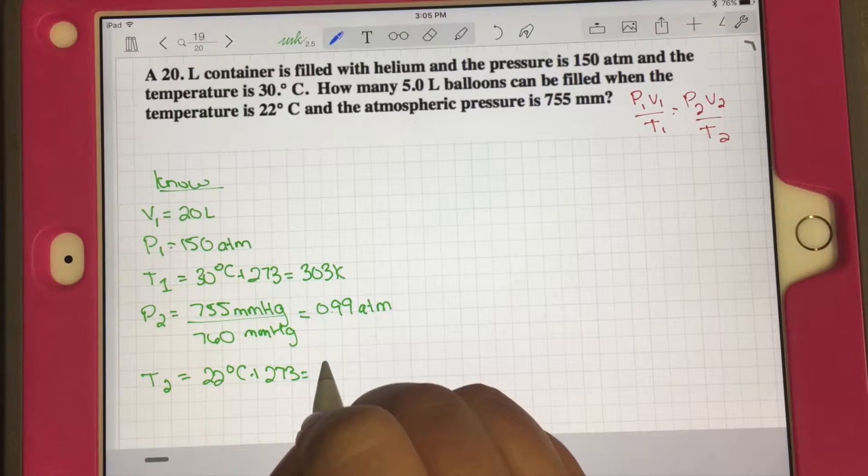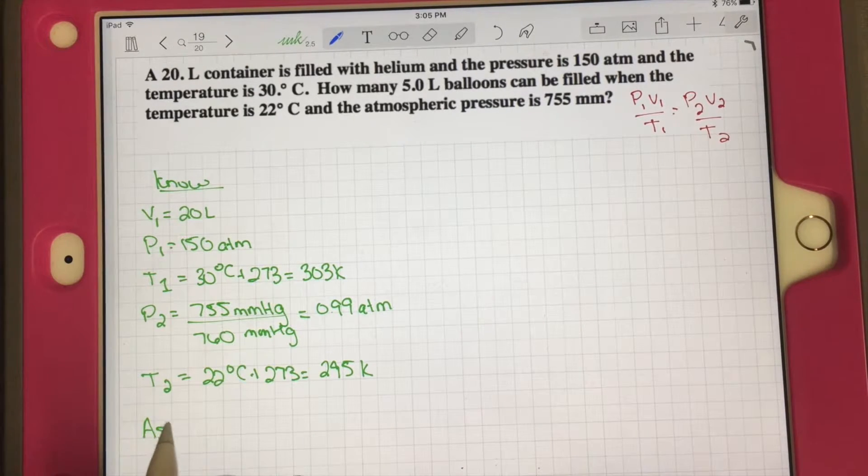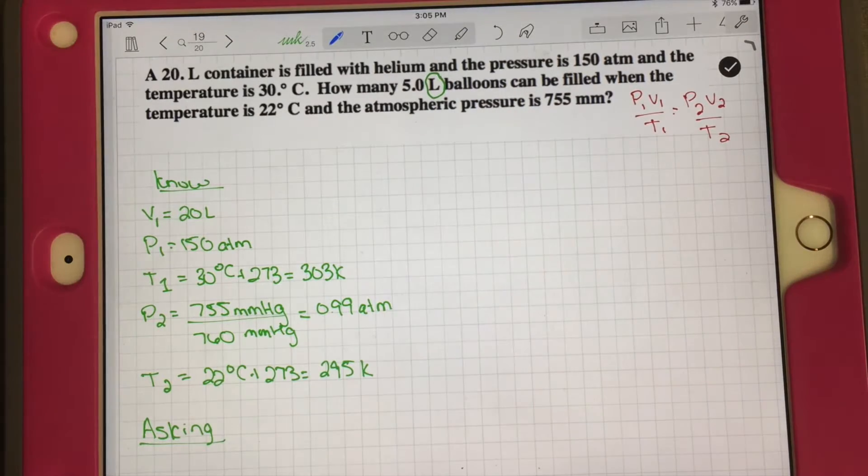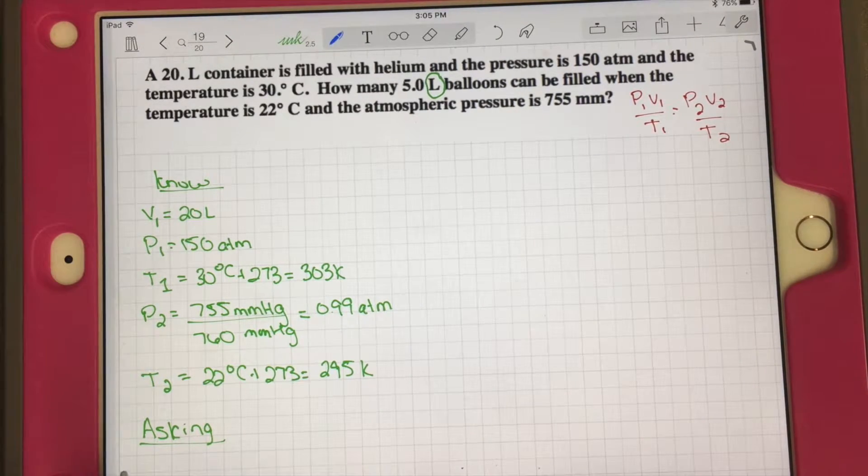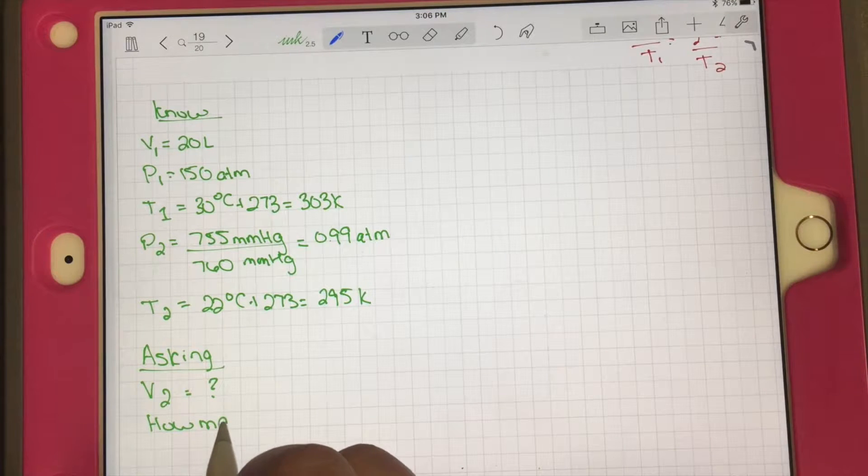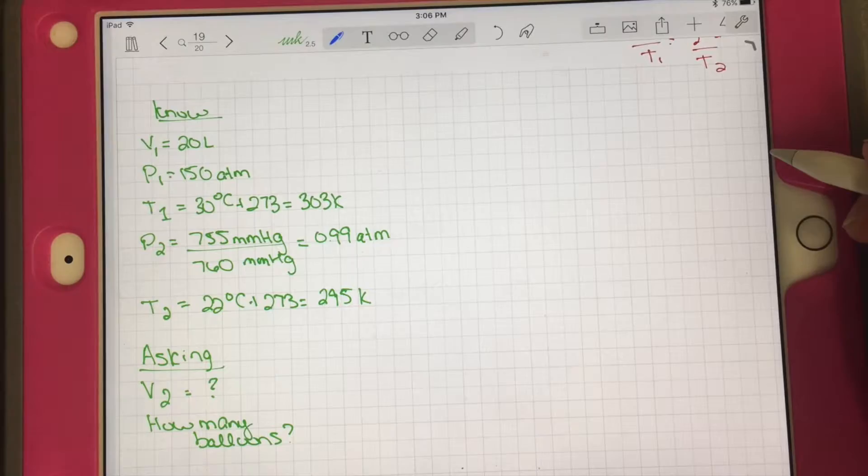T2 equals 22 degrees Celsius that we have to convert to Kelvin. They're asking how many 5 liter balloons can be filled. Because what they're asking us gives us the units of liters, what we need to figure out is V2.